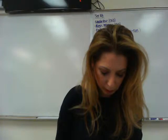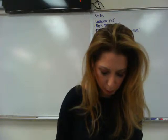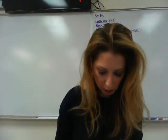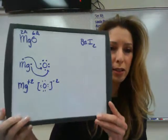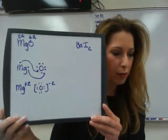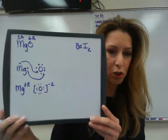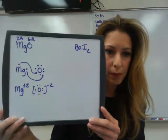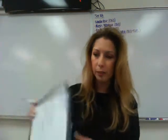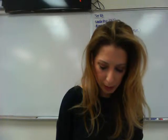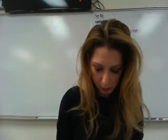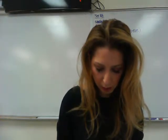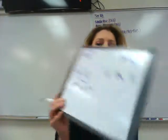When magnesium donates its electrons, it forms a plus two charge. Oxygen will now have eight dots around it, in a bracket, and since it accepted two valence electrons, it will have a negative two charge. For barium iodide, I'm going to make this look symmetrical, putting barium in the middle and the two iodines on either side.